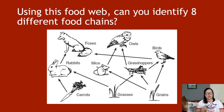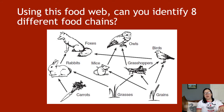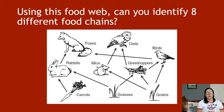You should pause the video here. There are eight different food chains within this food web. I've given you one already — grass → rabbit → fox. Try to identify the remaining seven. Pause the video and give that task a go.